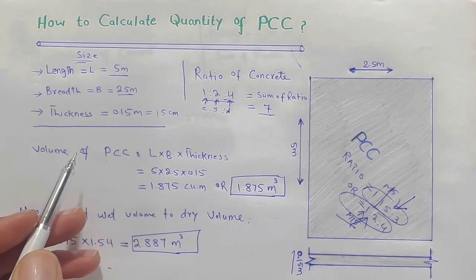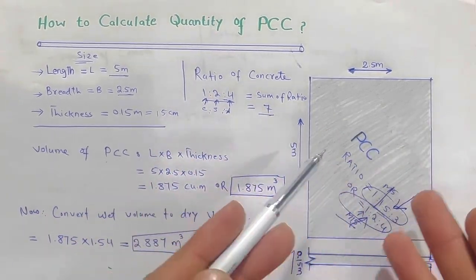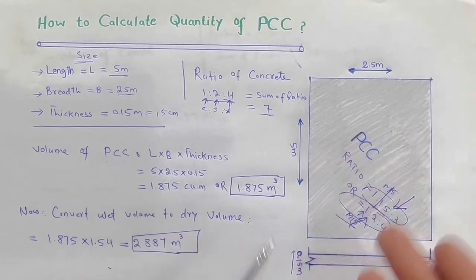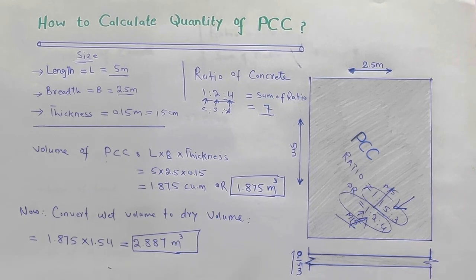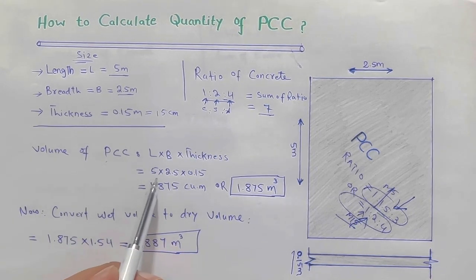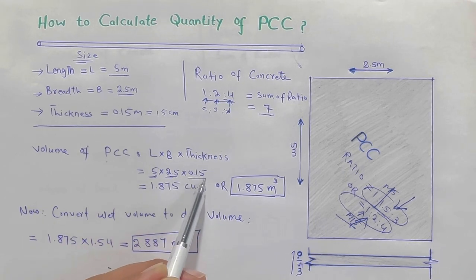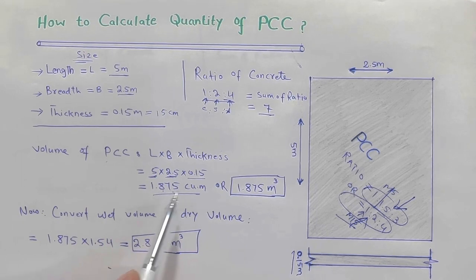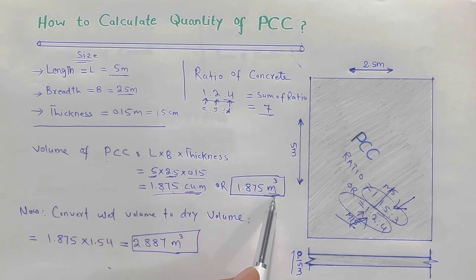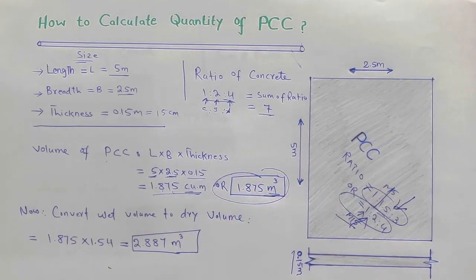First of all we need to find the volume of this object - suppose this is a slab or a floor. Length is 5 meter, width or breadth is 2.5 meter, thickness is 0.15 meter. So the total volume is 1.875 cubic meter. This is the wet volume of PCC in which we will find the material quantities.